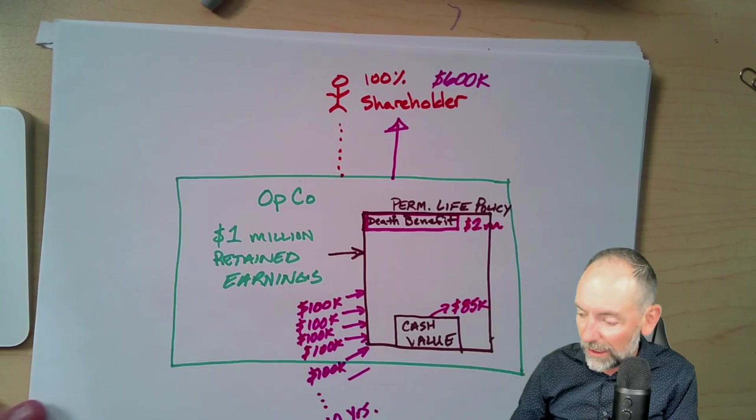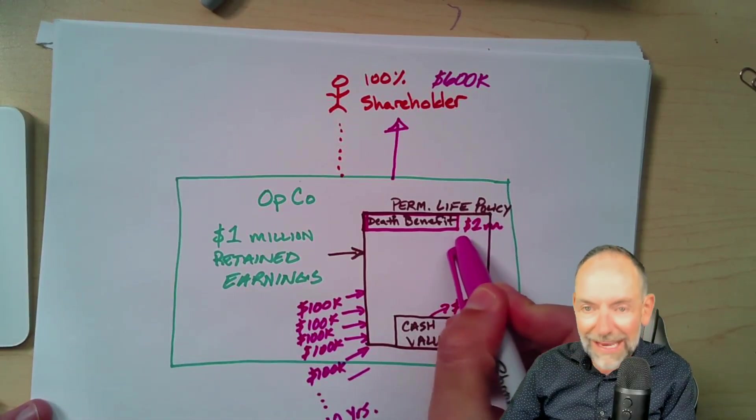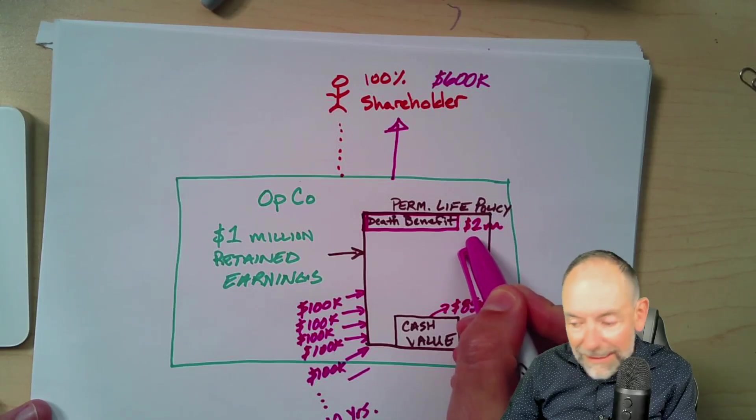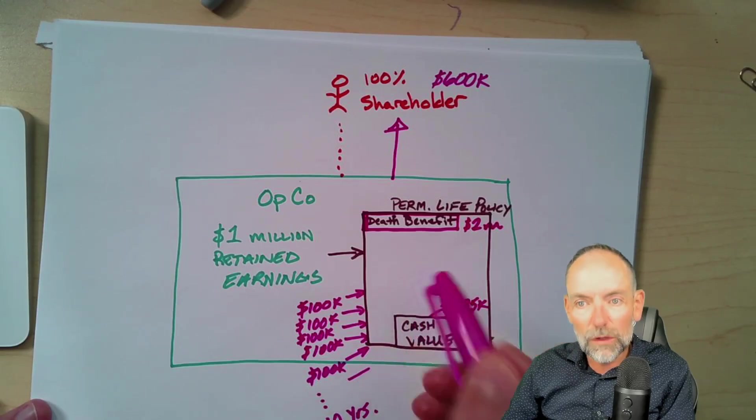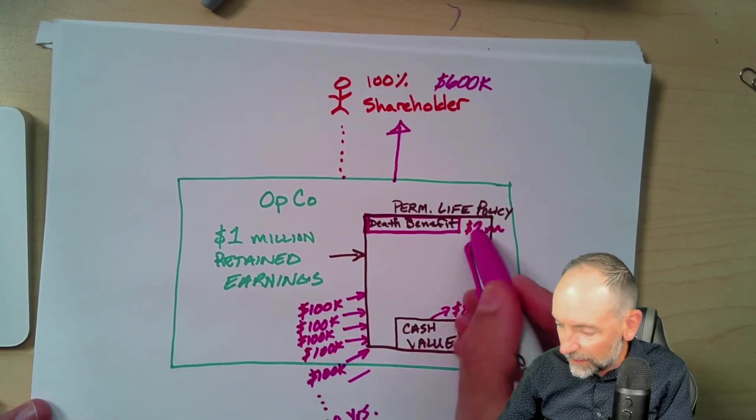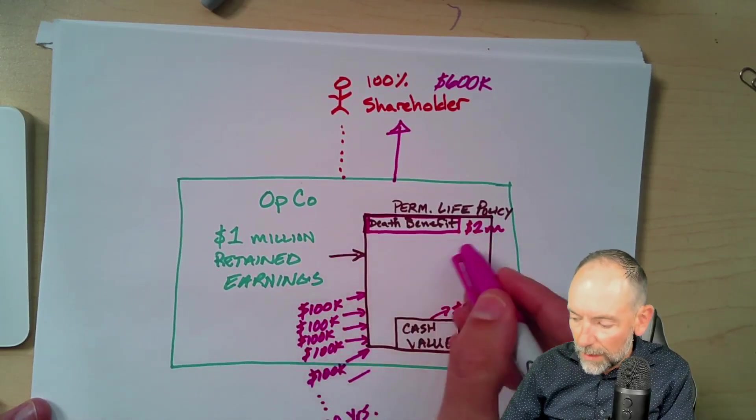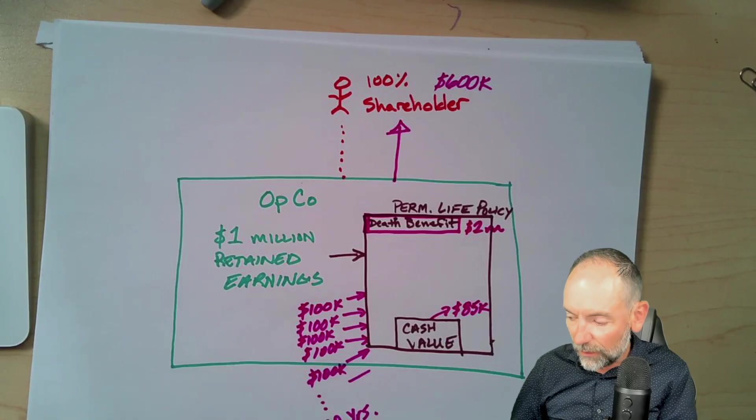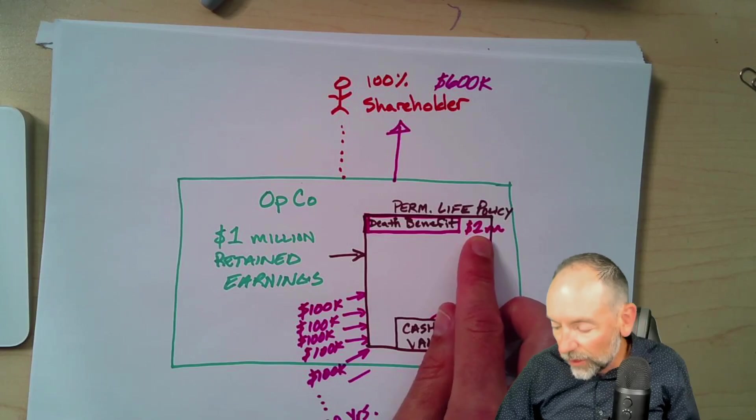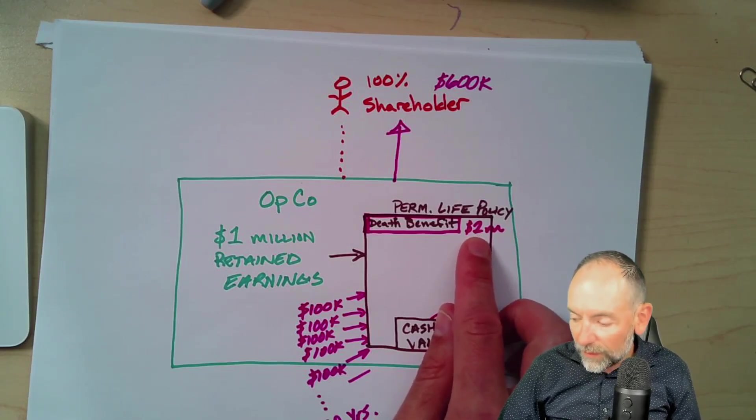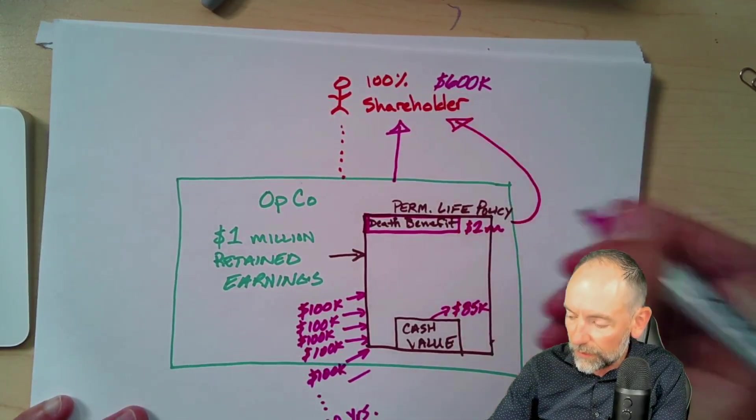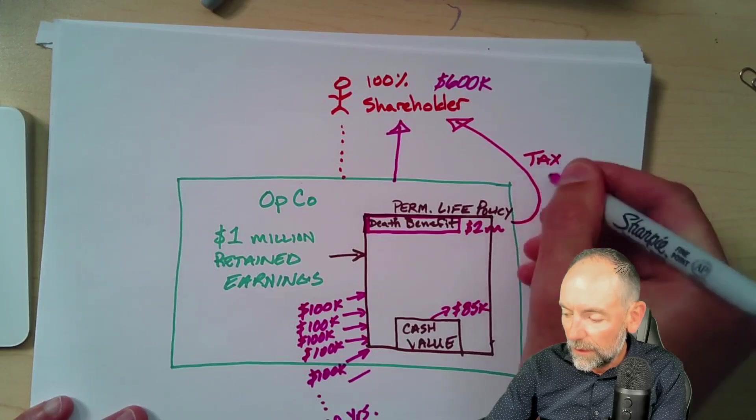In year two, that number is going to go up. Now I've put $200 in. By the time I get to about year five, the way we design these policies, you're going to notice that your cash value is going to be greater than the $500 that's been put in there. And it's going to keep growing and compounding. The beauty is it's tax-free. When this death benefit pays out, it's going to pay out tax-free net of the premium you put in into the shareholders.